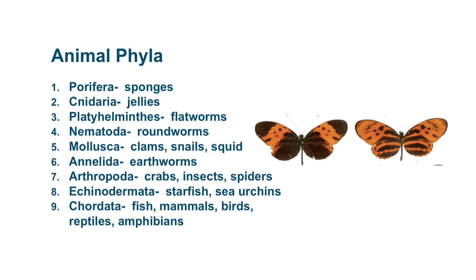Finally, we'll talk about the animal phyla. There are many of these and you need to make sure that you can identify some of the animals that go into the phyla and their characteristics. Porifera includes the sponges. Cnidaria includes jellies and anemones. Platyhelminthes is flatworms. Nematoda are roundworms. Mollusca are the clams, snails, squid, and octopods. Annelida are earthworms. Arthropoda are the crabs, insects, spiders, etc. Echinodermata are starfish, sea urchins, and their relatives. And finally, Chordata are the fish, mammals, birds, reptiles, and amphibians — these are the animals with backbones.